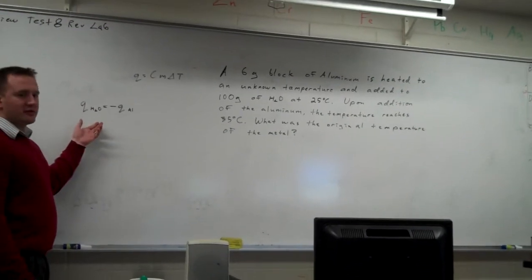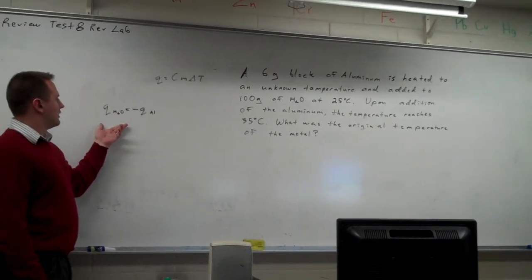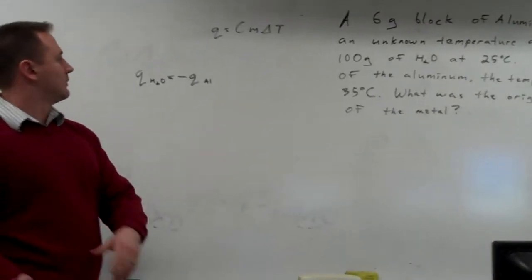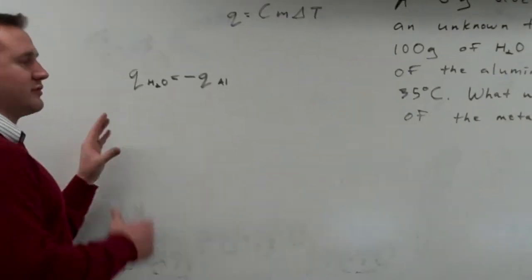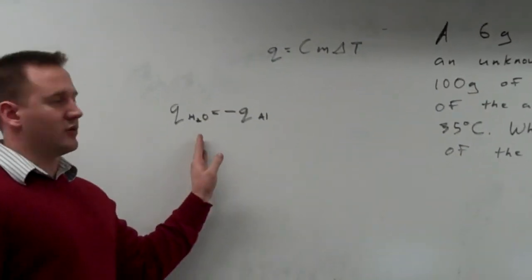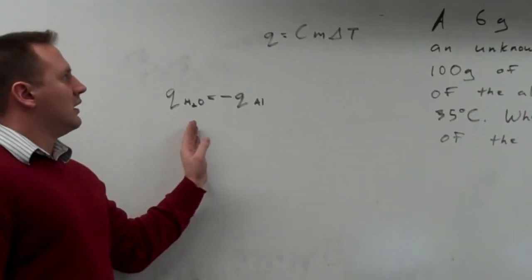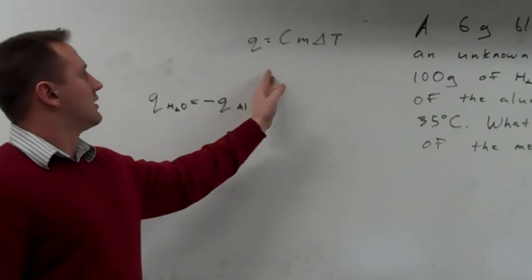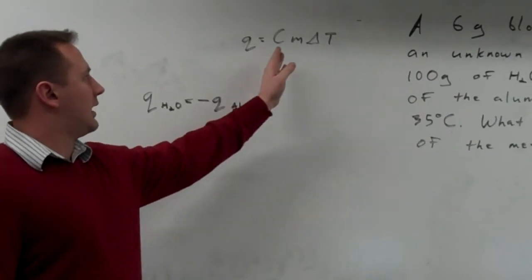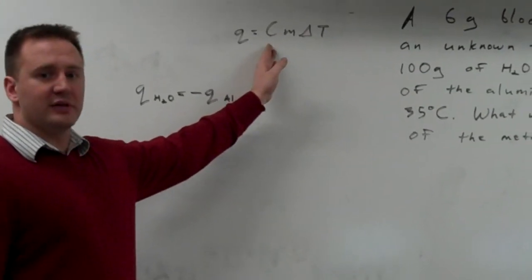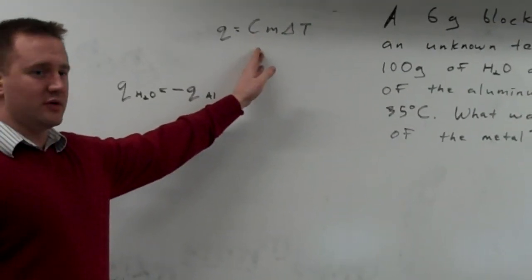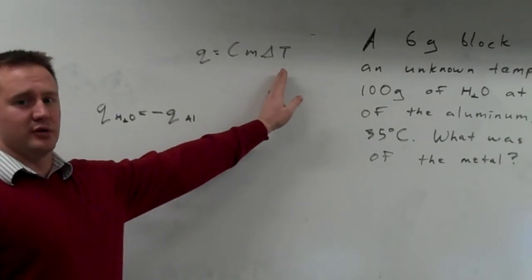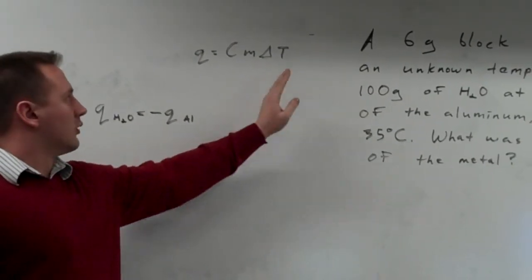According to the first law of thermodynamics, the heat given off by the aluminum is going to be equal to the heat gained by the water. The heat transferred can be calculated by multiplying the specific heat of an object times the mass times the change in temperature it undergoes.